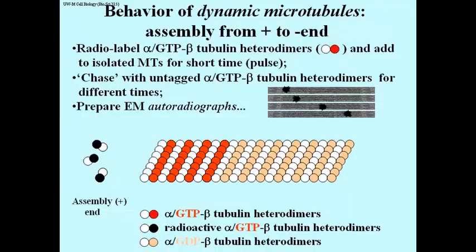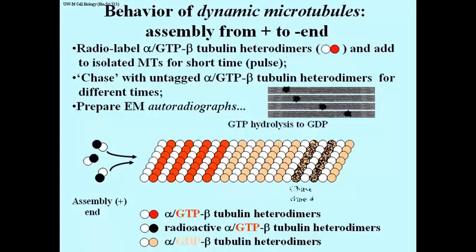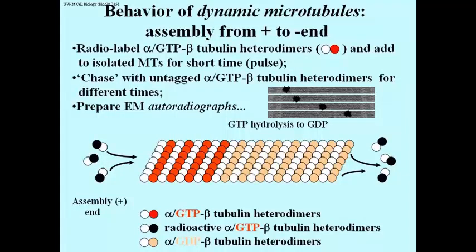What this means is shown in the cartoon: alpha-beta heterodimers are adding to one end and coming off the other. The radioactive heterodimers add at the plus end, and if followed over time, this explains the autoradiograph pattern. If you wait long enough after the chase, the microtubules are no longer radioactive at all — because what comes off at the minus end, the disassembly end, is GDP-bound, and GDP-bound heterodimers cannot participate in adding back to the plus end.